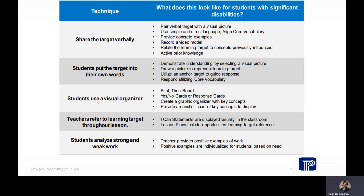This is an excellent opportunity to think about what sharing a learning target looks like for students with disabilities. You can share it verbally, but some students may need visuals, pictures, video, or audio to support understanding of the learning goal. Students might benefit from putting the target into their own words and repeating back what they believe they're supposed to learn. You can also use visual organizers — boards that show first we do this, then we do this — or yes/no cards and graphic organizers to create ways for more responses.